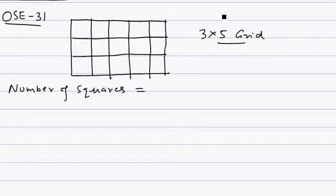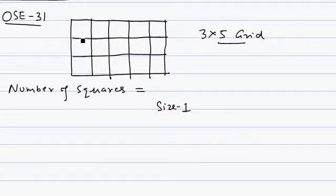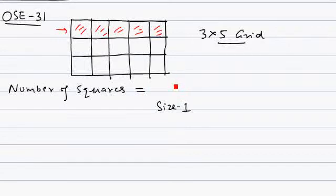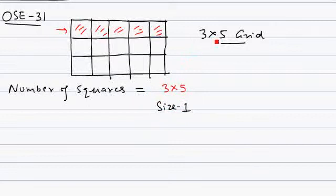We have to count rectangles excluding squares. First, let's see how to count the number of squares in this grid. We count those squares which are of size 1, meaning 1 unit length. Starting from the first square: first, second, third, fourth, fifth — five squares in the first row. Now, how many rows are there? Three rows, so three into five for size 1.